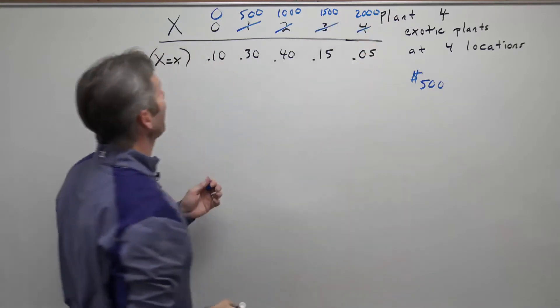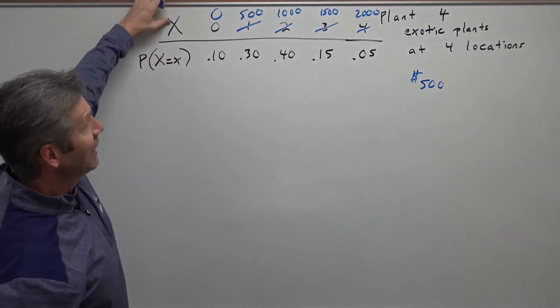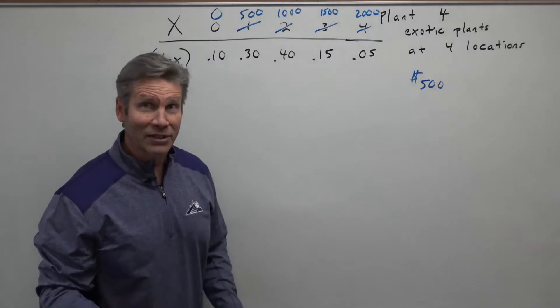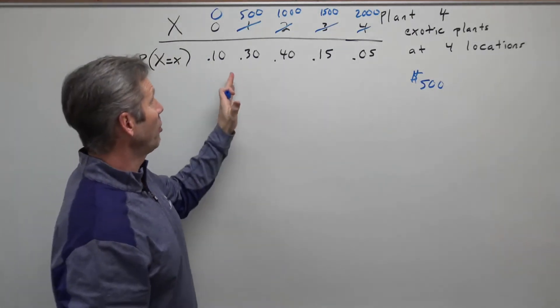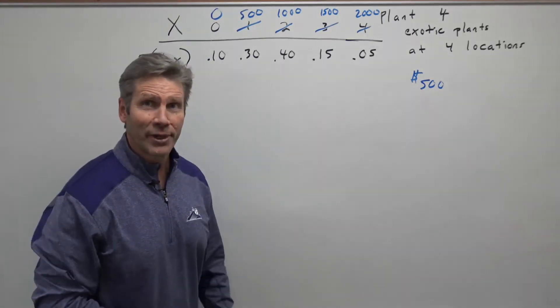So now the random variable is how much money we're going to make. It's still numerical, and it's still based on these same probabilities.